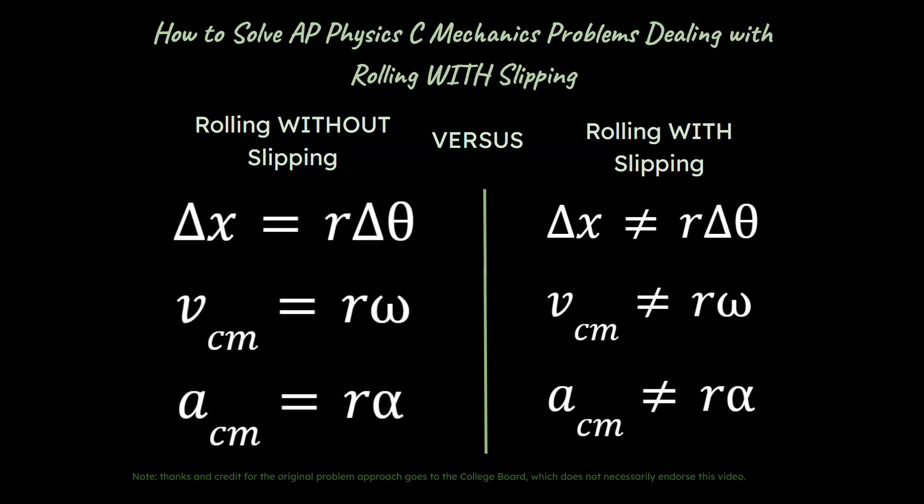First of all, these equations on the left side apply when there is rolling without slipping. Those are true statements. On the right side they are no longer true. If you have slipping, then these relationships between linear variables like this one and rotational variables like this one do not hold true if there is slipping going on. Let's see how to work out a problem that has something like that in a slightly different style.